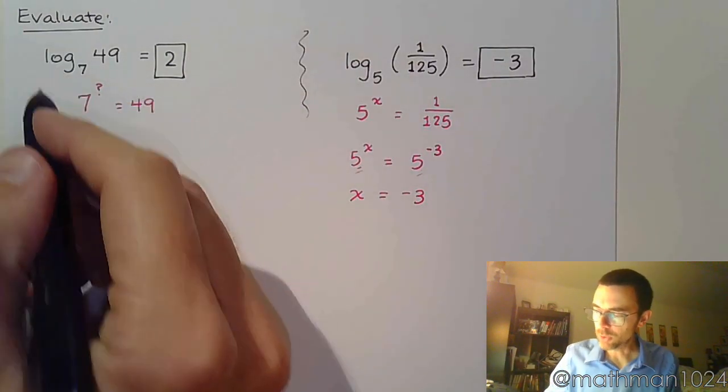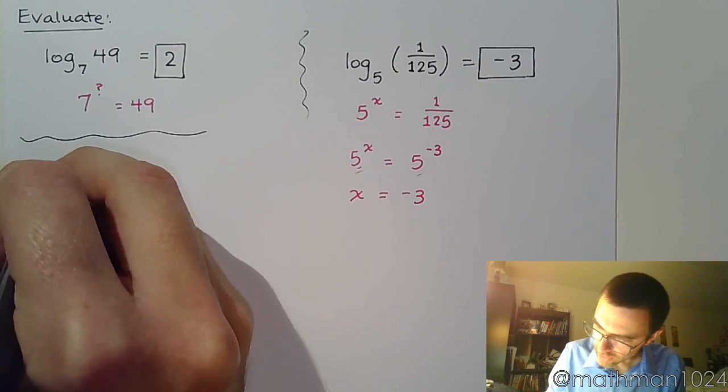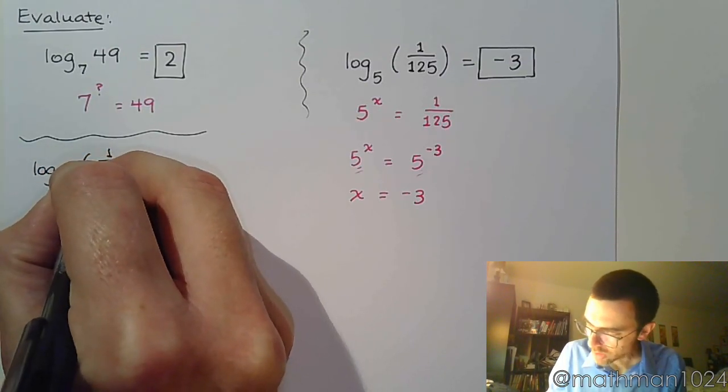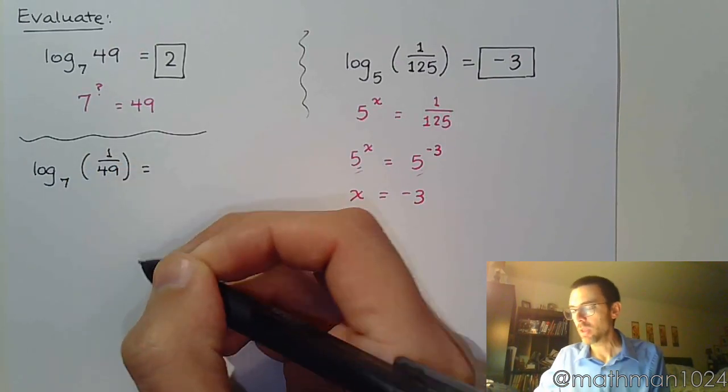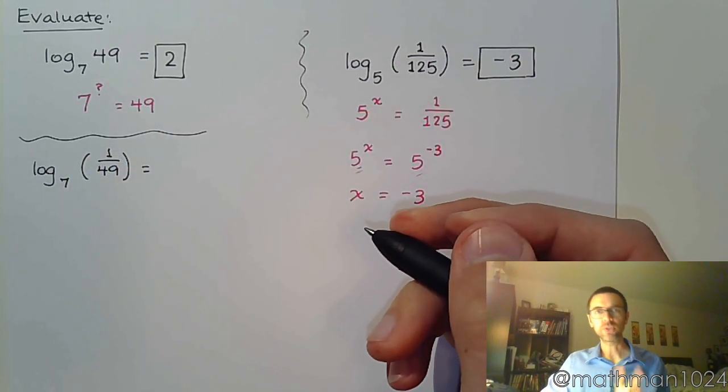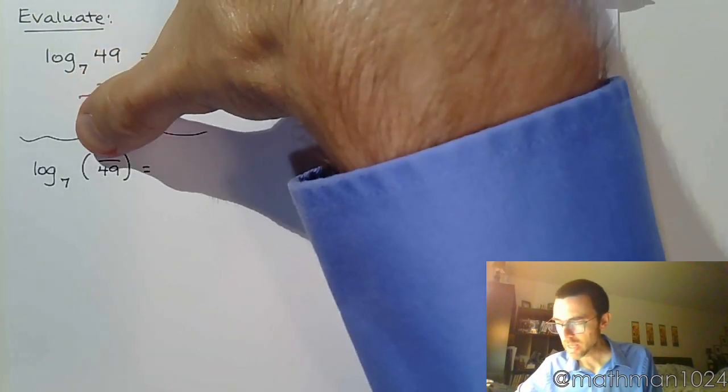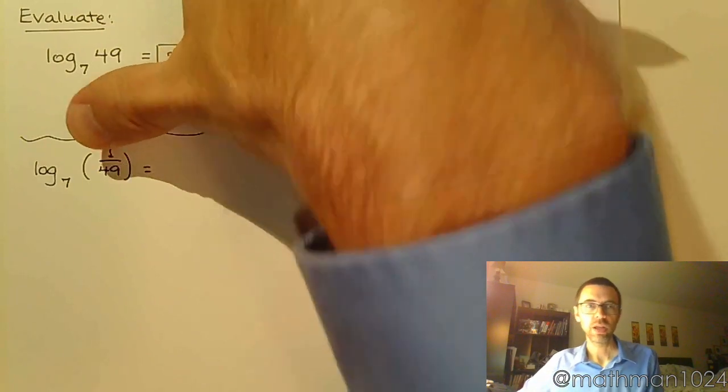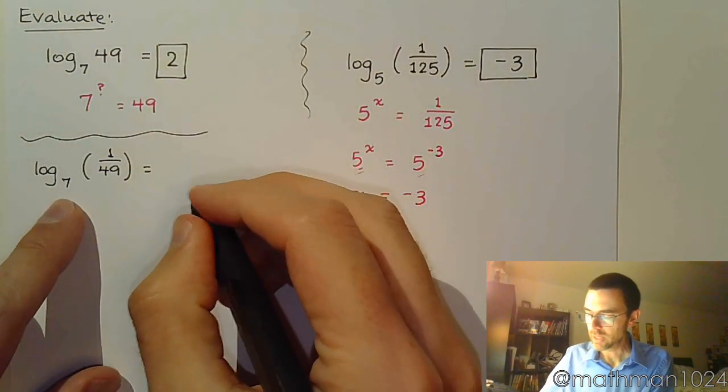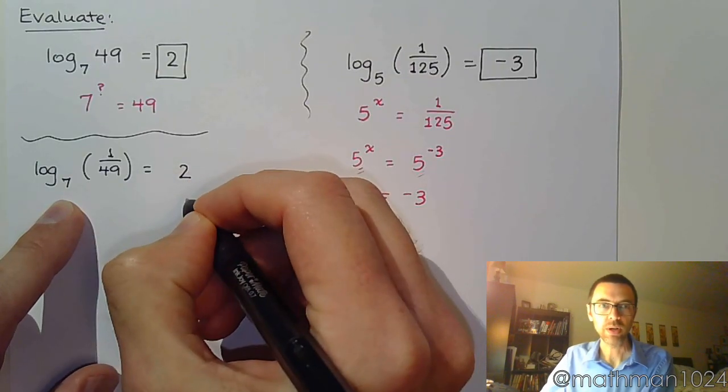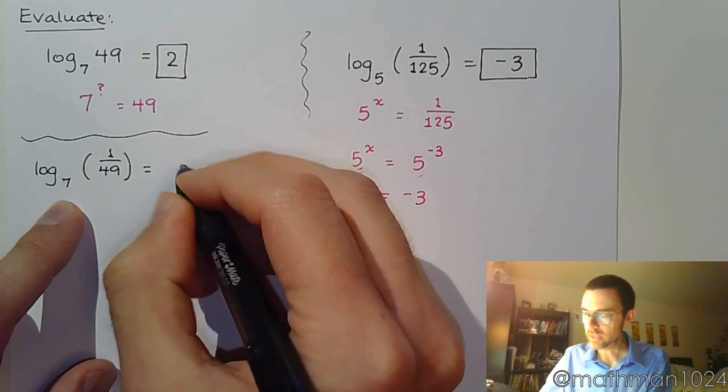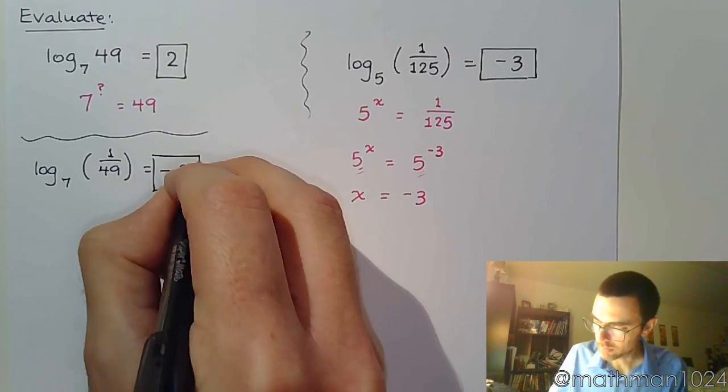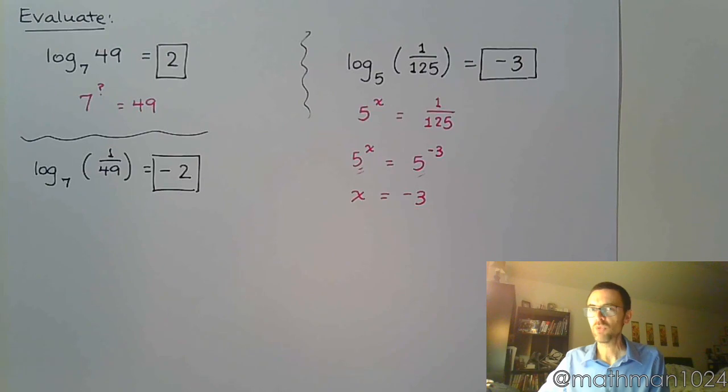So as a follow-up to this one, if I say, what is log base 7 of 1 over 49? Okay? So let's think about the trick that we just talked about. Now, if I didn't have the 1 there, and I just said log base 7 of 49, you would say 7 to the second power gives me 49. But then that's going to be negative because it's in the denominator. See? Really not that bad.